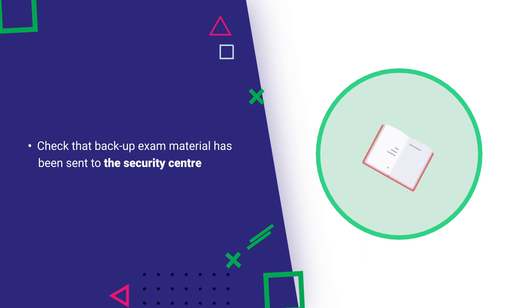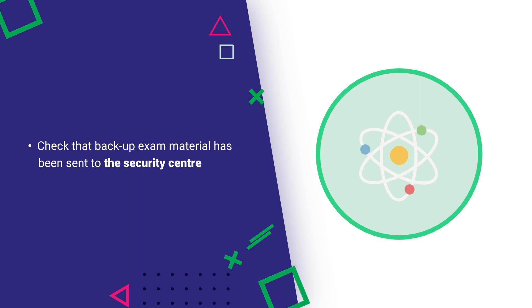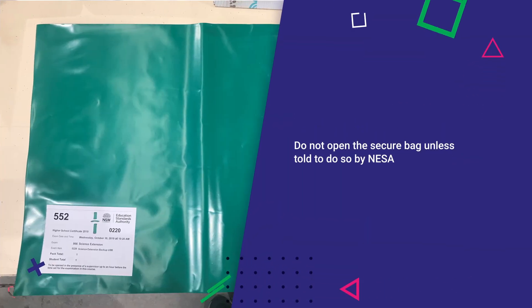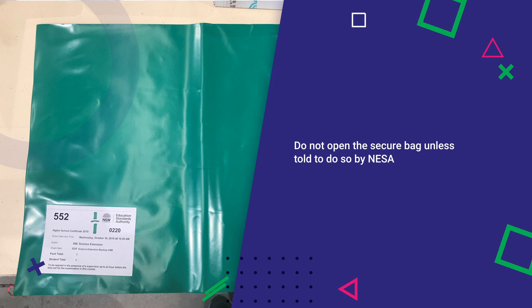Finally, you need to check that the secure backup material for Science Extension has been sent to your security centre. You will be advised by NESA when you can do this. Like on every HSC exam day, you need to go to the security centre to collect the secure material. For the Science Extension exam, this will not be exam papers but a copy of the online exam for each student, stored securely on a USB.